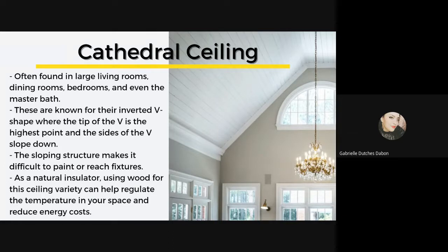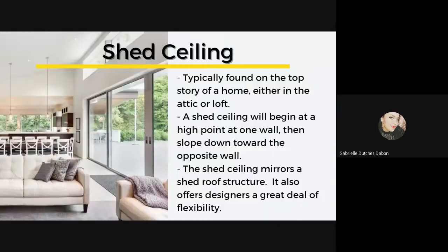Cathedral ceilings are often found in large living rooms, dining rooms, bedrooms, and even master baths. Cathedral or vaulted ceilings are known for their inverted V shape, where the tip of the V is the highest point and the sides slope down. These high ceilings are made from a variety of materials; linear wood is a great option, whether planks or panels. These ceilings consume a lot of energy, and if the angled frame is not wide enough, it will reduce ventilation. Using wood as a natural insulator can help regulate temperature and reduce energy costs.